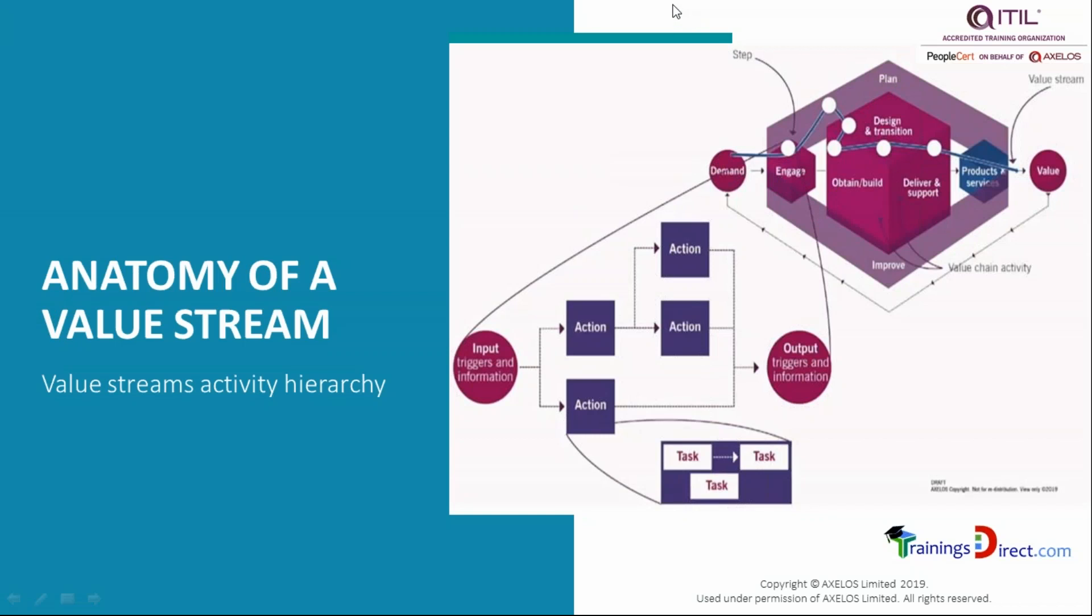On the top right, you see the picture about the six value chain activities - the SVC, which is one of the five elements of the service value system. You see the demand on the left and the value on the right. Products and services are created based on one or more of these six value chain activities.